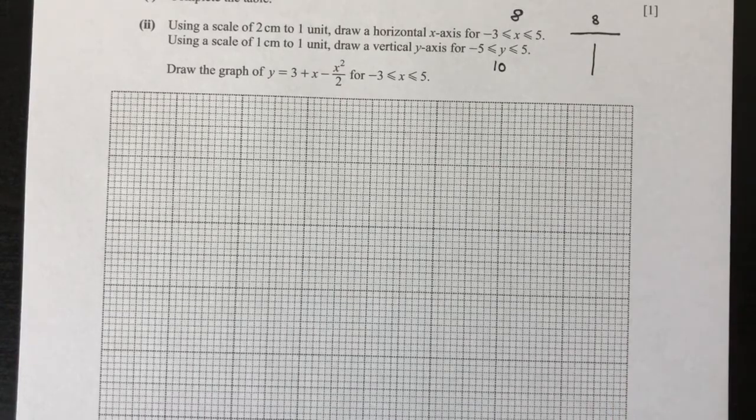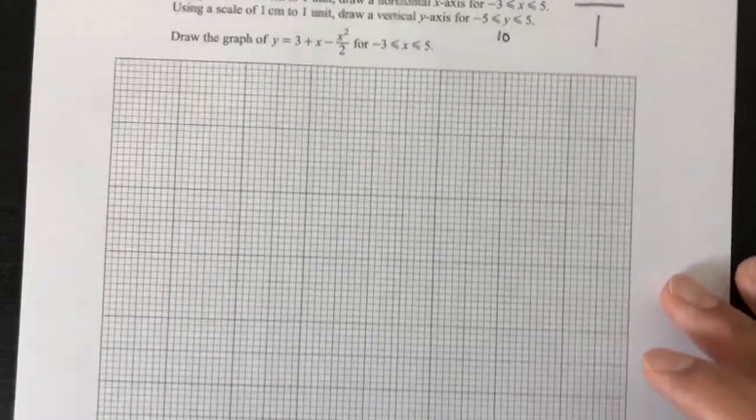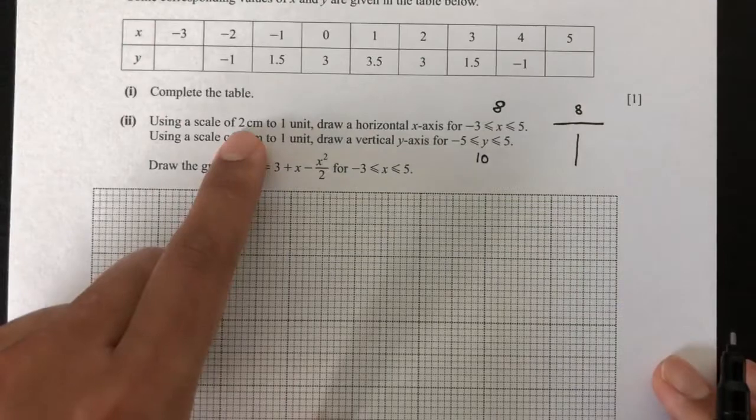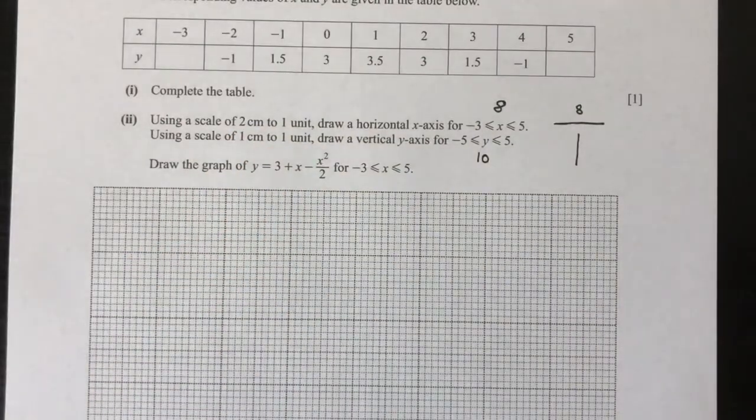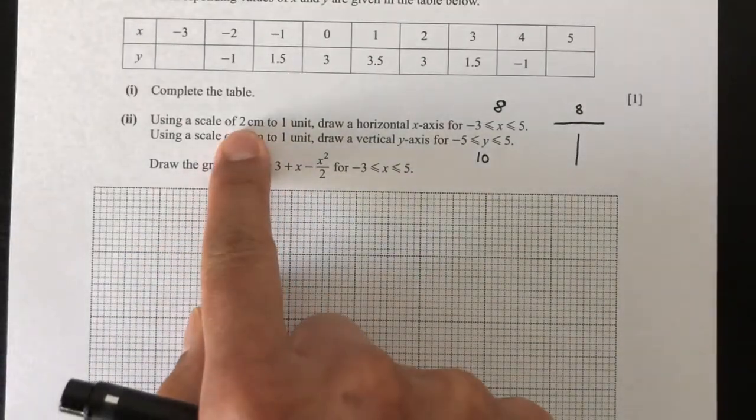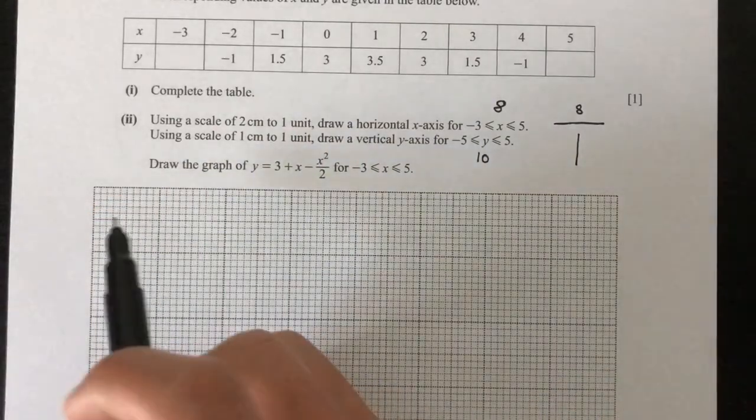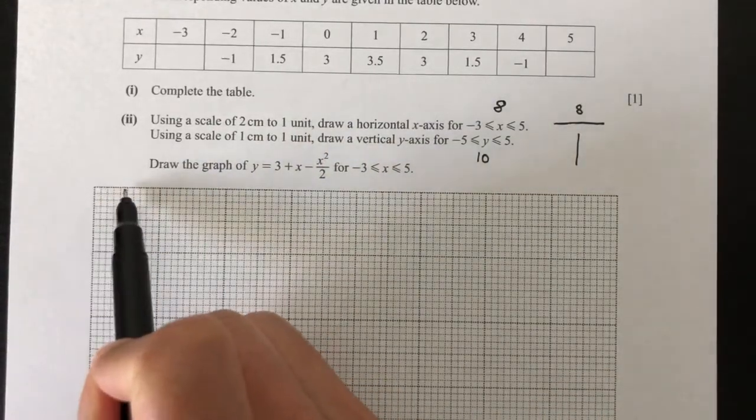What I like to do is, I like to first count how many boxes I have on my vertical axis. So first to understand, what does this mean? Basically, what it means is that 2 centimeters is 2 small boxes. For example, this is 1 box, this is 1 centimeter. And this is 2 centimeters.